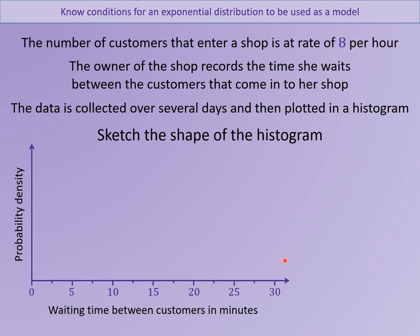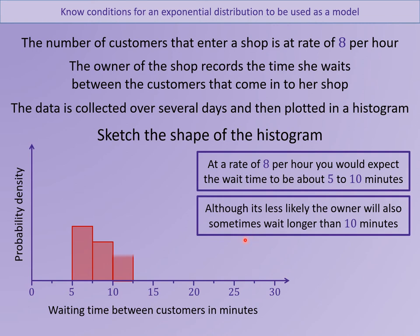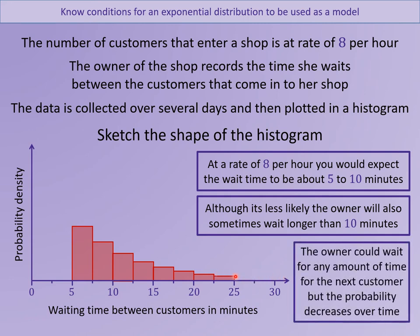If you're thinking it's 8 per hour, the majority of customers should come in the 5-to-10 minute category, because you'd need one every about 5 to 10 minutes to fit 8 per hour. But once you get past 10 minutes, there might be times where she has to wait longer. These wait times never actually end — she could wait half an hour between customers. It's not very likely, but it could happen. As you go along, any of these times are possible, but they're getting less and less likely.